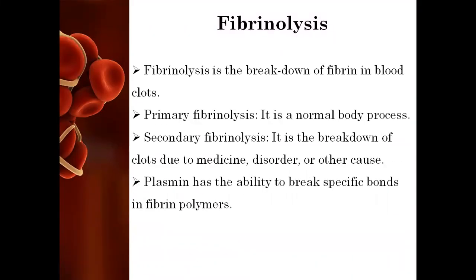Fibrinolysis is the process in which there will be breakdown of fibrin in the blood clots. This is for already formed clots. It has two types: primary fibrinolysis, which is a normal body process where the already formed blood clot will get dissolved in the blood; and secondary fibrinolysis, where breakdown of clots takes place due to medicine, disorder, or any other cause. For this purpose, in our body there is a proteinaceous material called plasmin, which has the ability to break the specific bonds in the fibrin polymers.